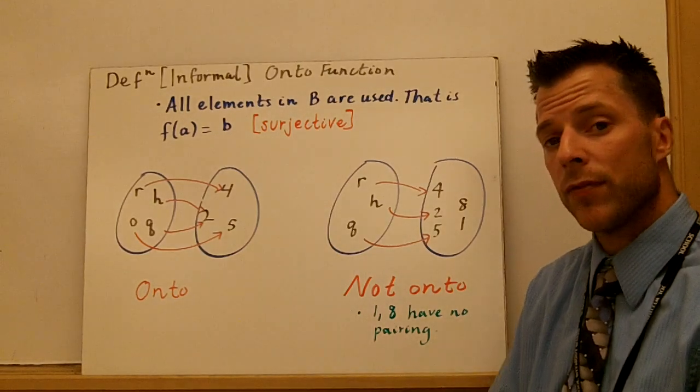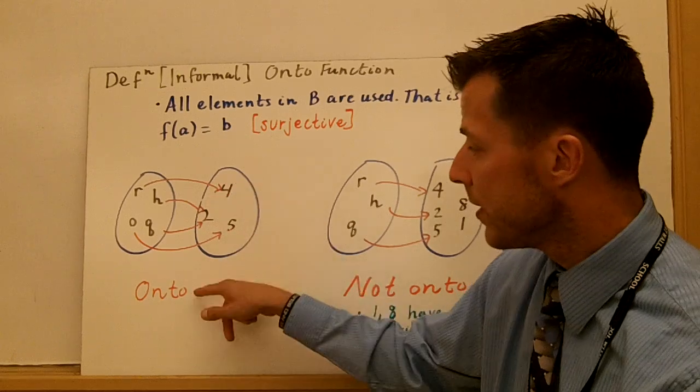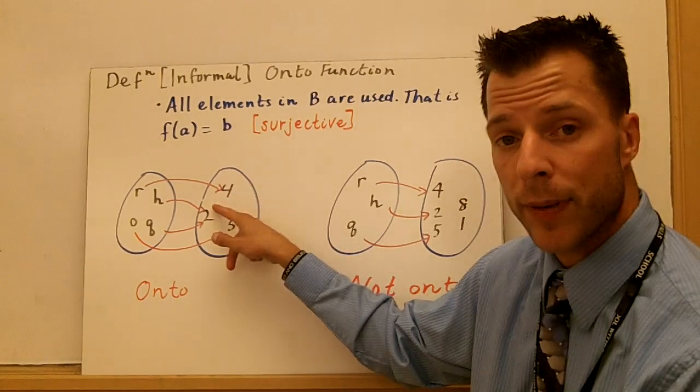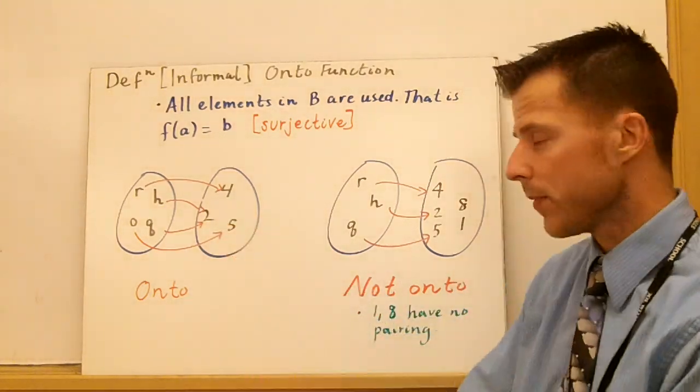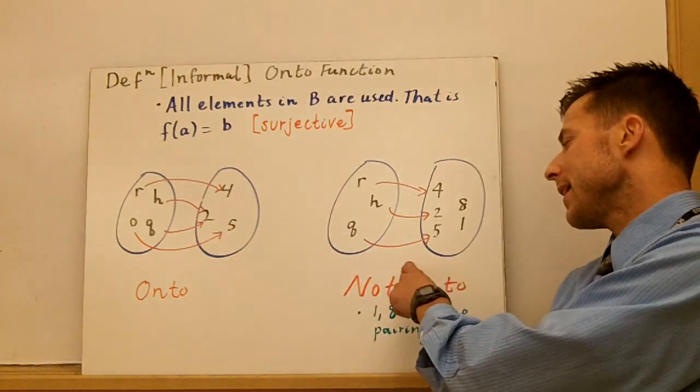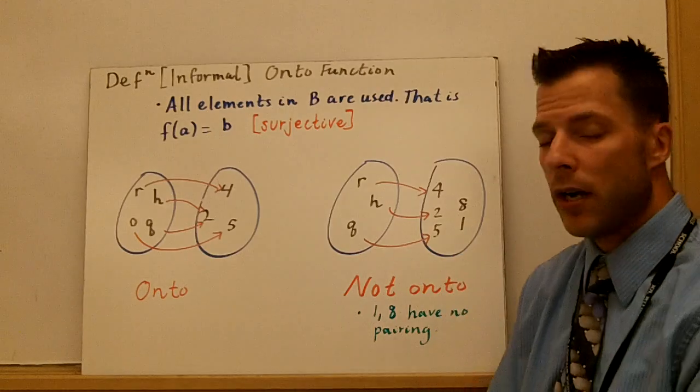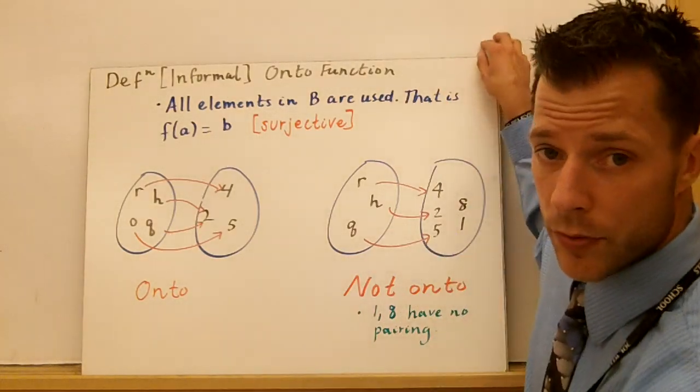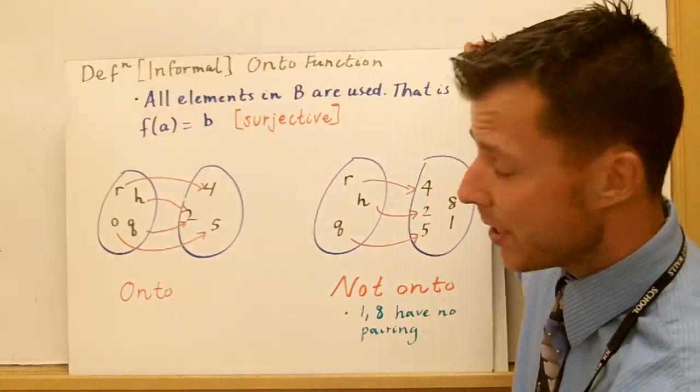So you just have to be careful. This is an onto function, but since 2 has two different pairings, it wouldn't be one-to-one. This is not an onto function because 8 and 1 are not paired with anything. So let's look at some examples where we're trying to figure out if functions are onto and one-to-one.